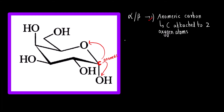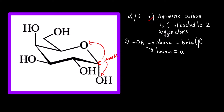The second step is at the anomeric carbon, you have to see the position of the OH group. If the OH is above the plane then it is a beta anomer, and if the OH is below the plane then it is an alpha anomer. There is a trick: 'A above' is opposite — B for beta; 'B below' means alpha. Here, OH is below the plane, so it is an alpha anomer.